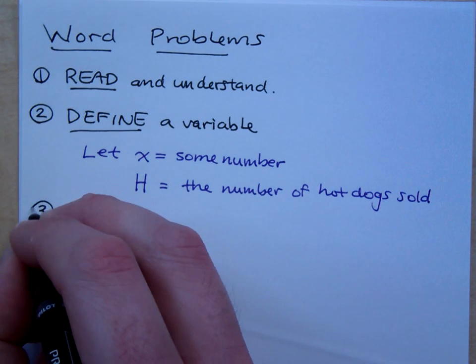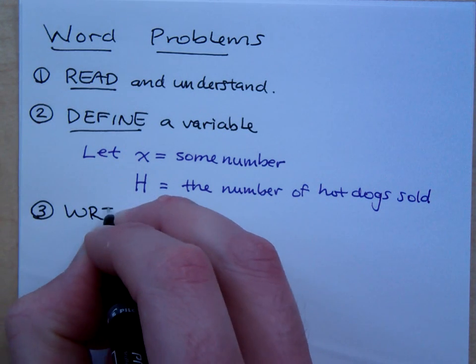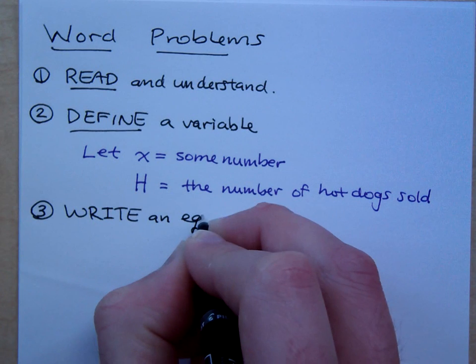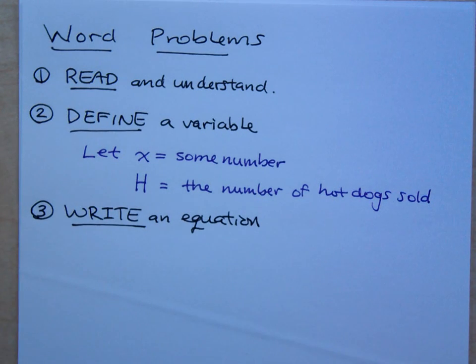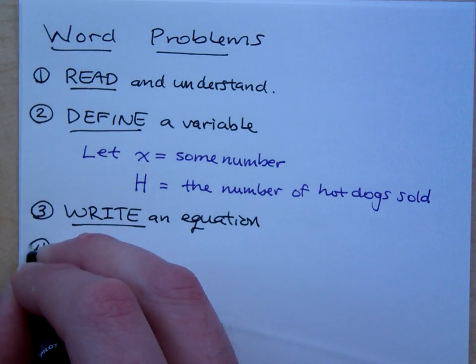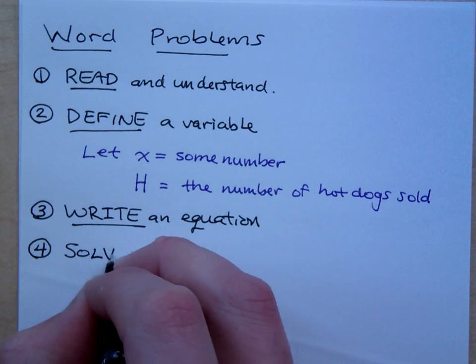Once you know what your variable is, then the third step is to write an equation. This is the most difficult step of all, is writing the equation. Taking what you see in the word problem and writing that equation. And hopefully, if you can write the equation, then step four should be easy. What do you think you would do after you write an equation? You're going to solve the equation.